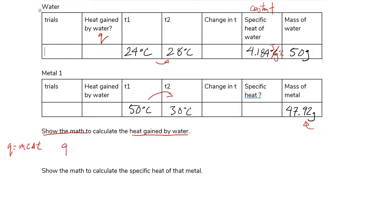Our Q is equal to M. Our M is going to be 50 grams times my C which is the specific heat of water, 4.184 joules per gram Celsius times my delta T. So it looks like it gained 4 degrees Celsius. So 4 Celsius.